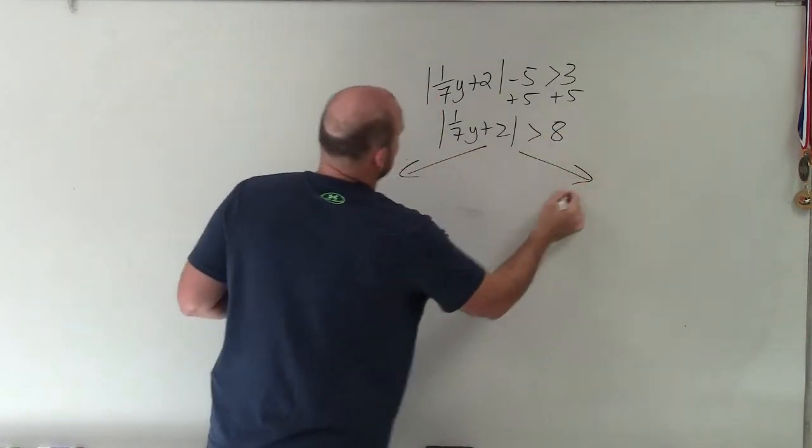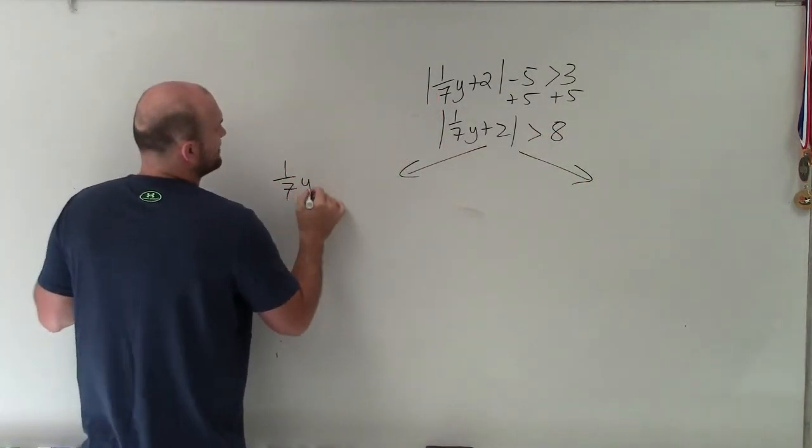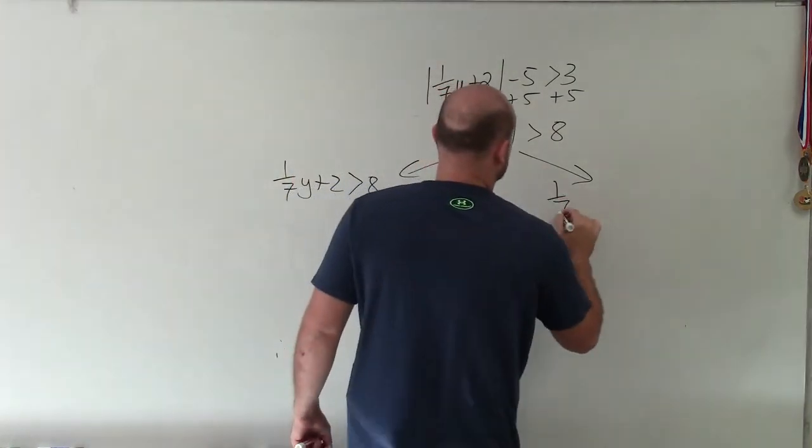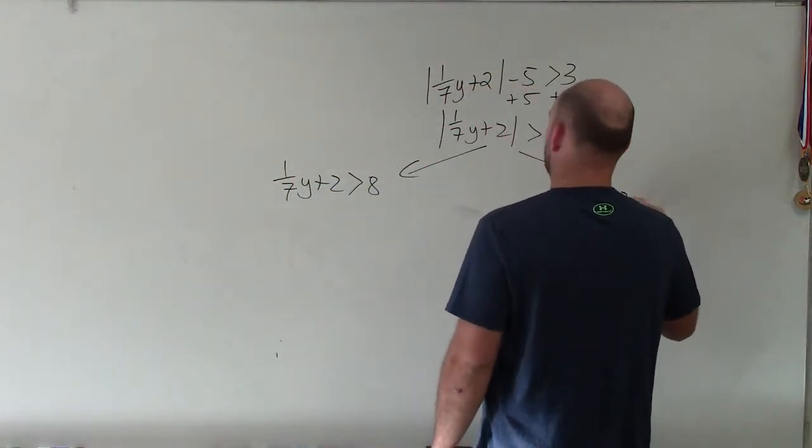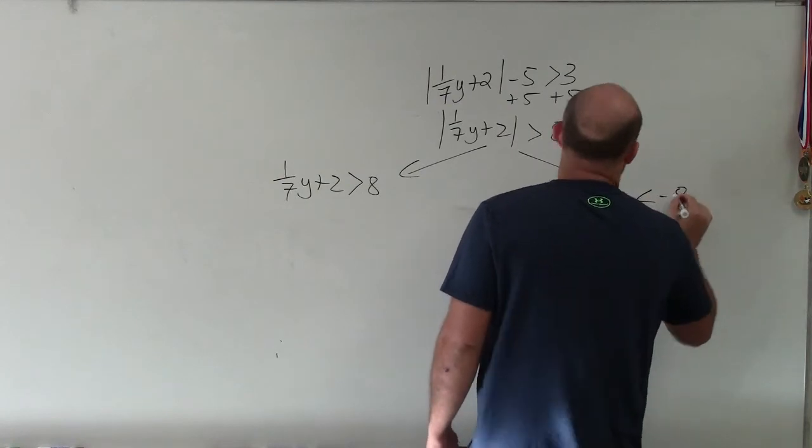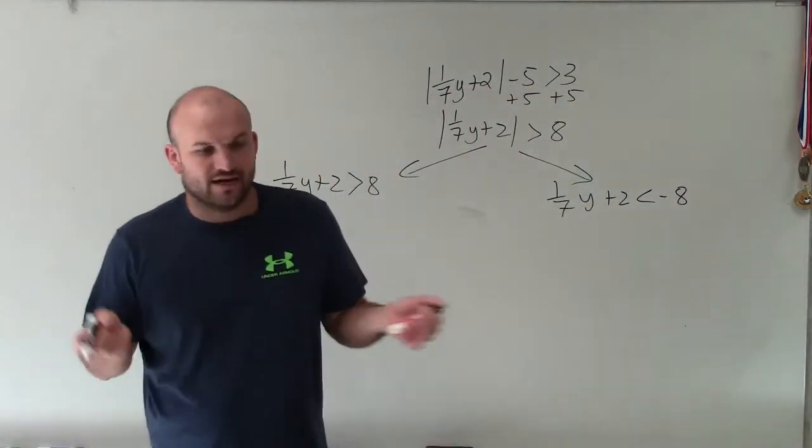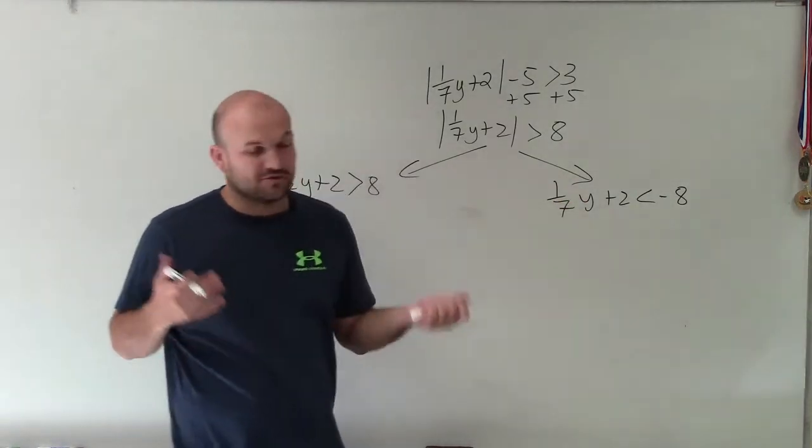Now I can create my two cases, which is 1 7th y plus 2 is greater than 8. And then 1 7th y plus 2 is less than negative 8, right? Just think of like multiplying by negative 1 on both sides. You've got to make sure you flip the sign.